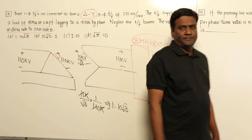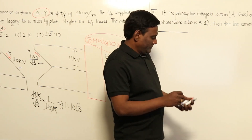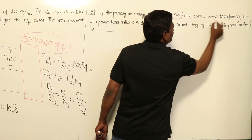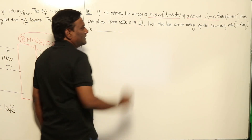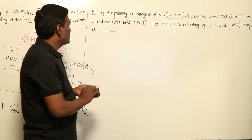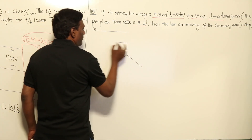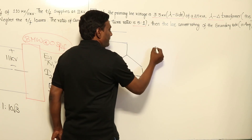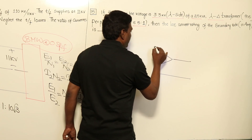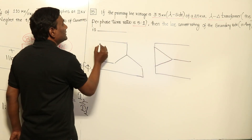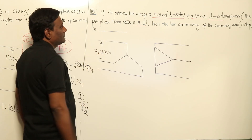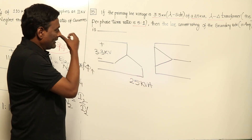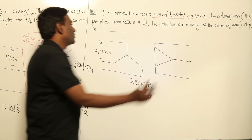Moving to the next question: the primary line voltage is 3.3 kV on the star side of a 25 kVA YD transformer. The per-phase turns ratio is 5:1. The secondary side is delta connected. We need to find the line current rating of the secondary side in amperes.